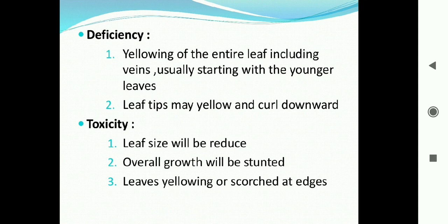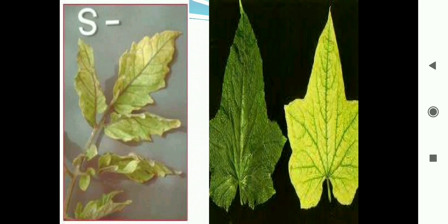Deficiency symptoms of sulfur: yellowing of the entire leaf including the veins, usually starting with the younger leaves due to sulfur's immobile nature. Leaf tips may yellow and curl downward. Toxicity symptoms: leaf size will be reduced, overall growth will be stunted if sulfur is provided more than the requirement, and leaves become yellowed or scorched at the edges.